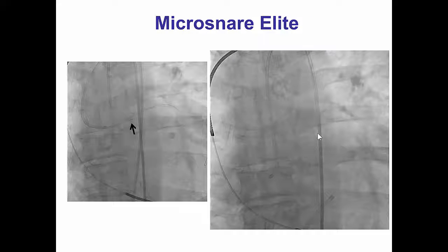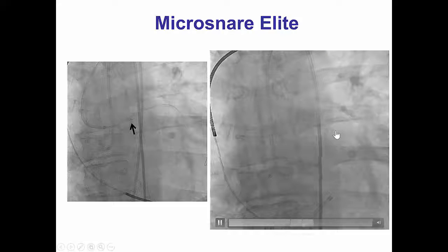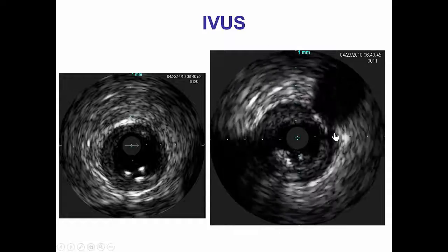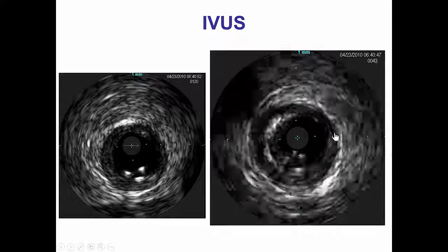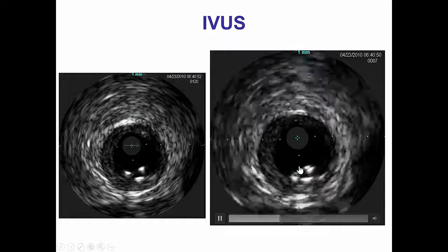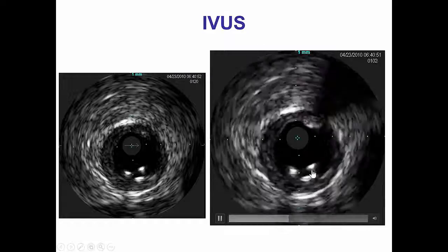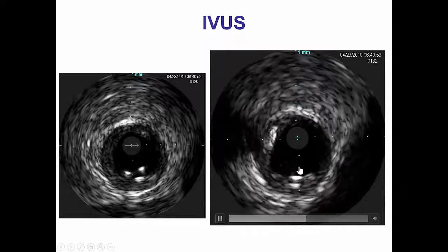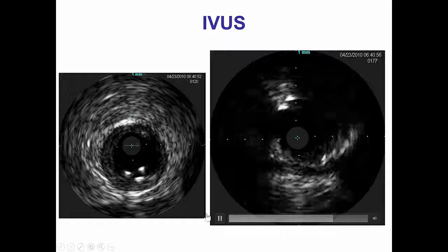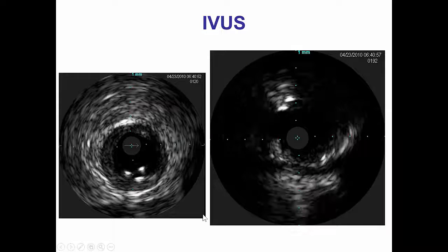In this particular case, we could not snare the stent, and in the process we actually lost the guidewire position. So we had to rewire in the left main and perform intravascular ultrasound, which demonstrates the lost stent sitting in the lumen of the left main and coming back all the way into the aorta.